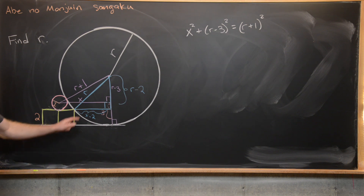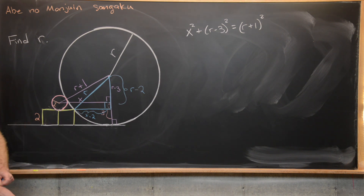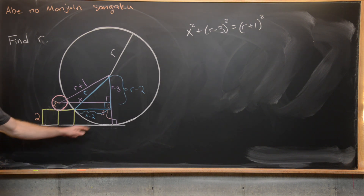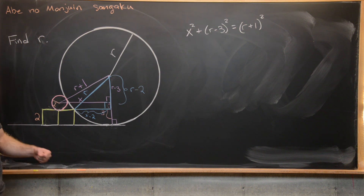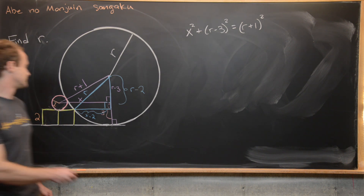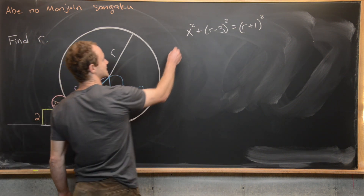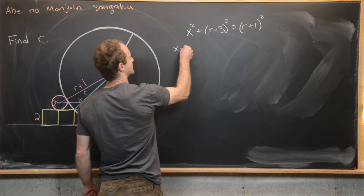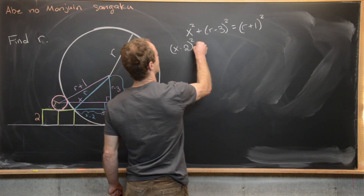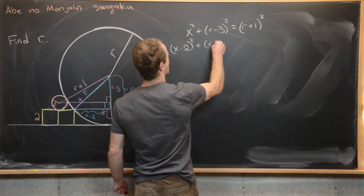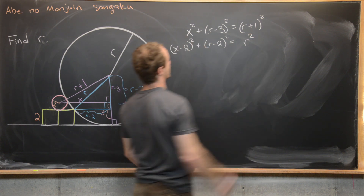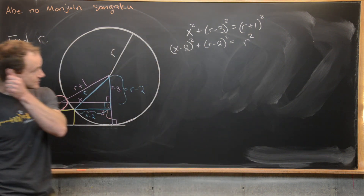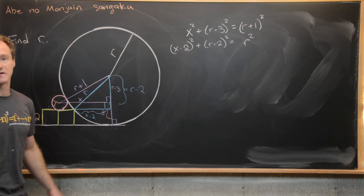We now apply the Pythagorean theorem to this second triangle as well, giving us another equation involving r and x: (x − 2)² + (r − 2)² = r².